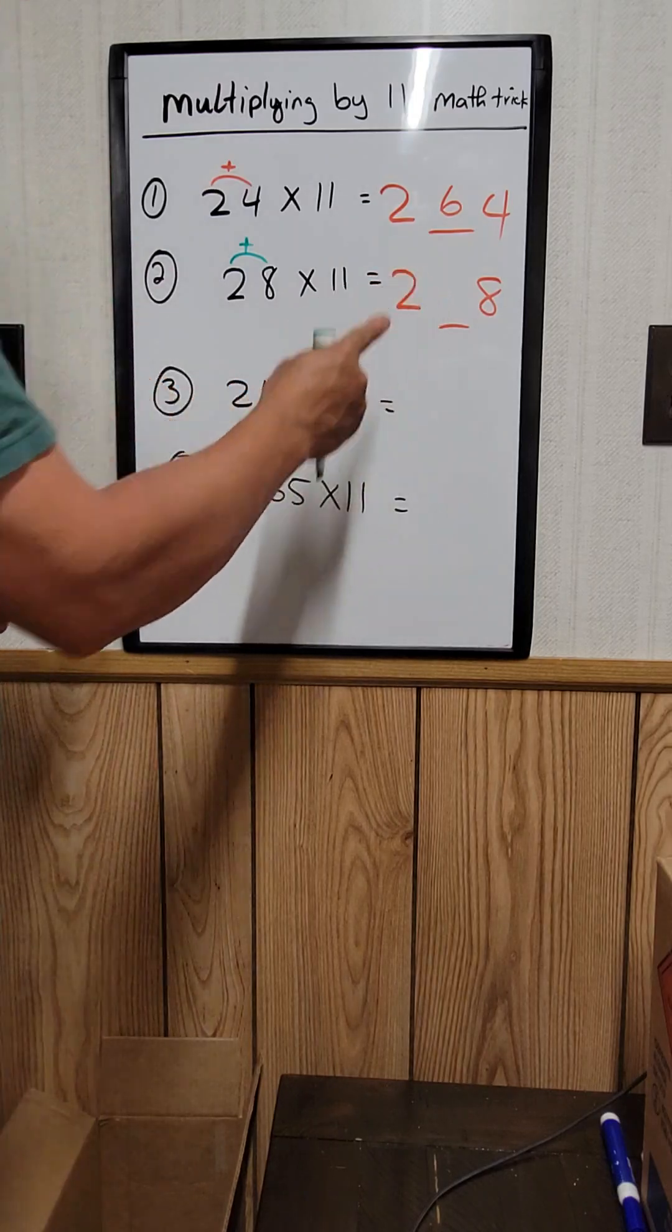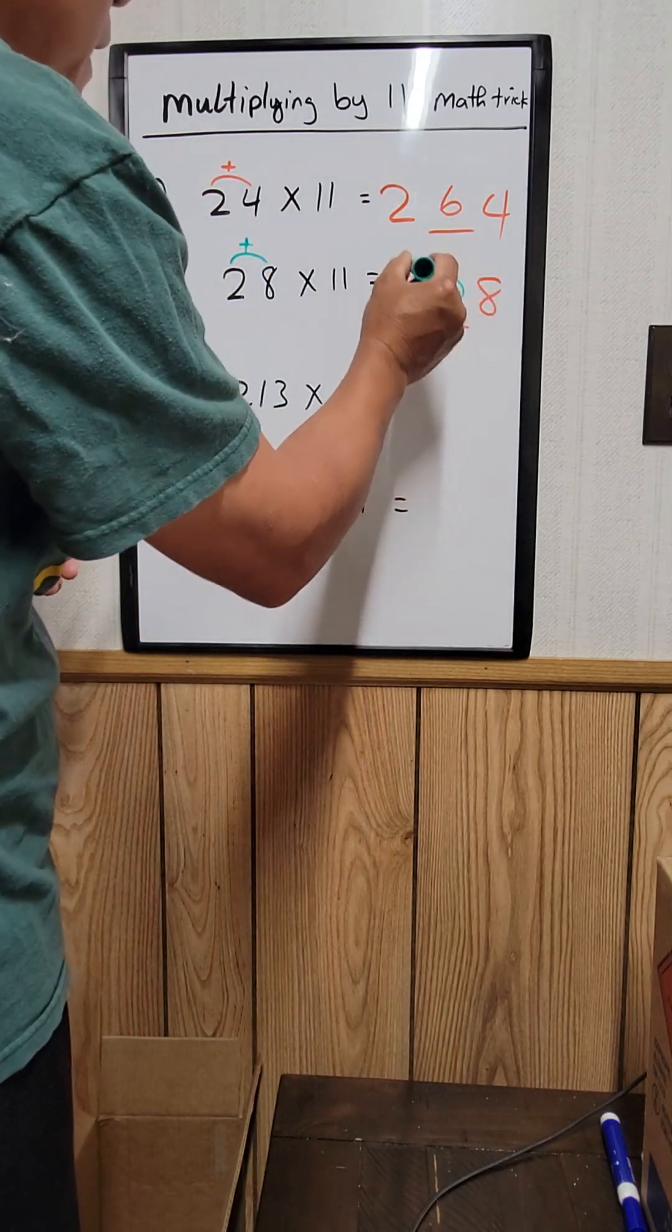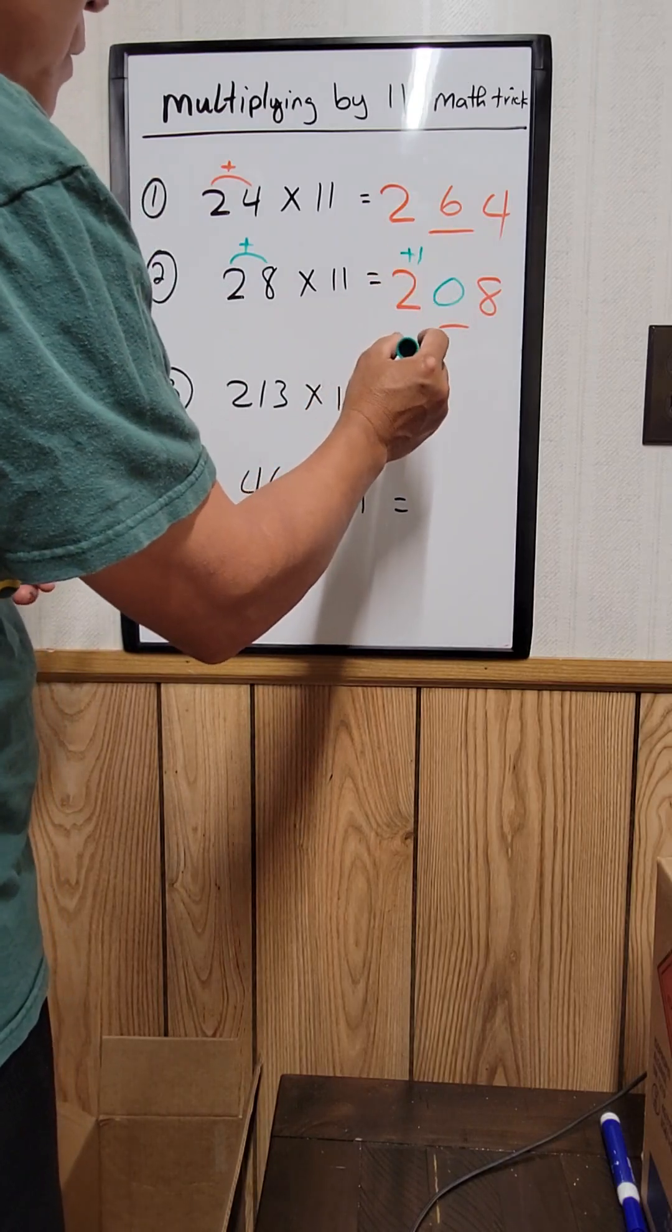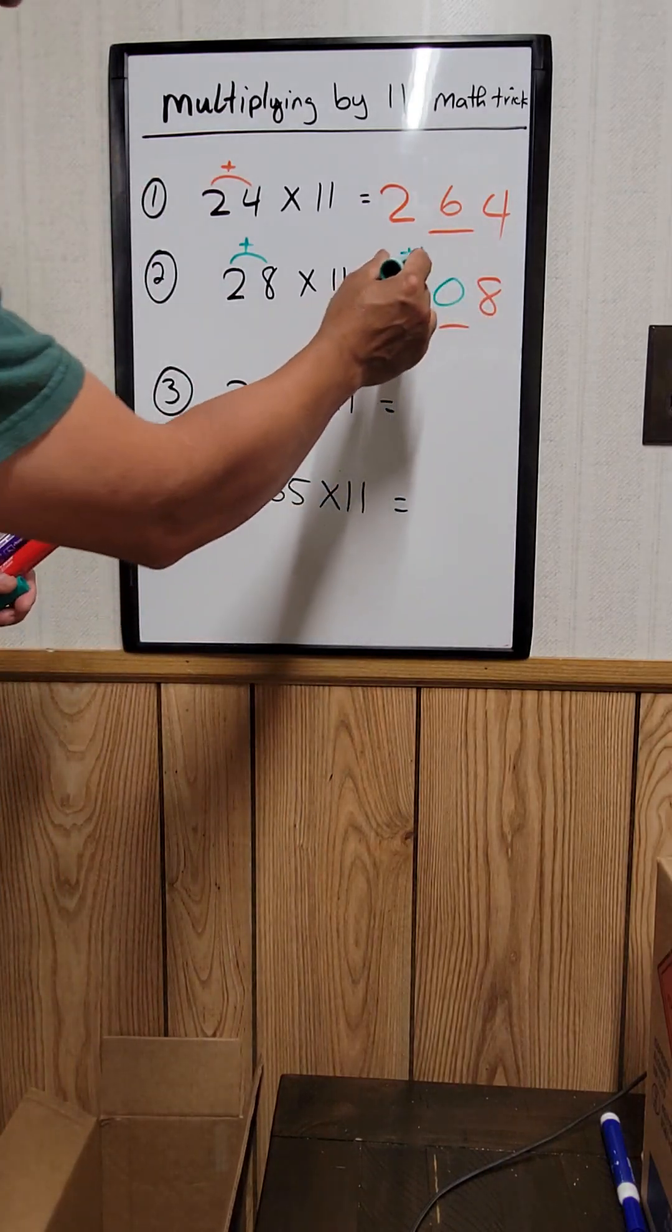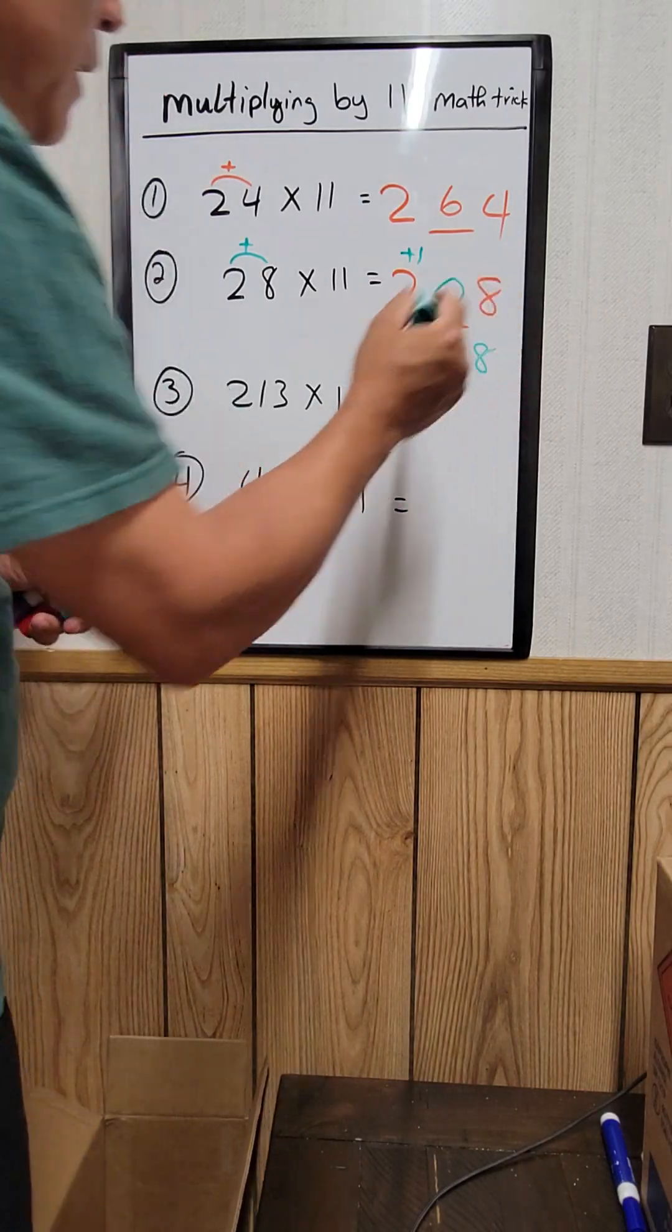But remember, in the middle number, you can only have one digit. So 10, you just write the 0 right here. And the 1, you plus it with the 2. So just an extra step right here. So that's equal to 3, 0, 8. See how easy it is?